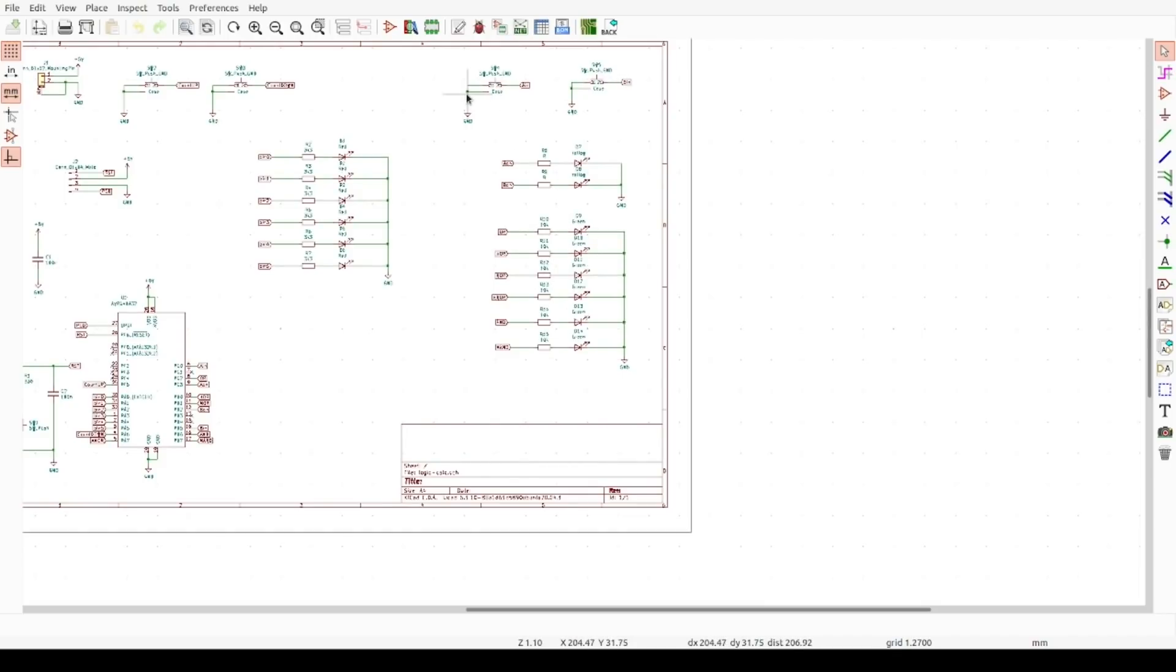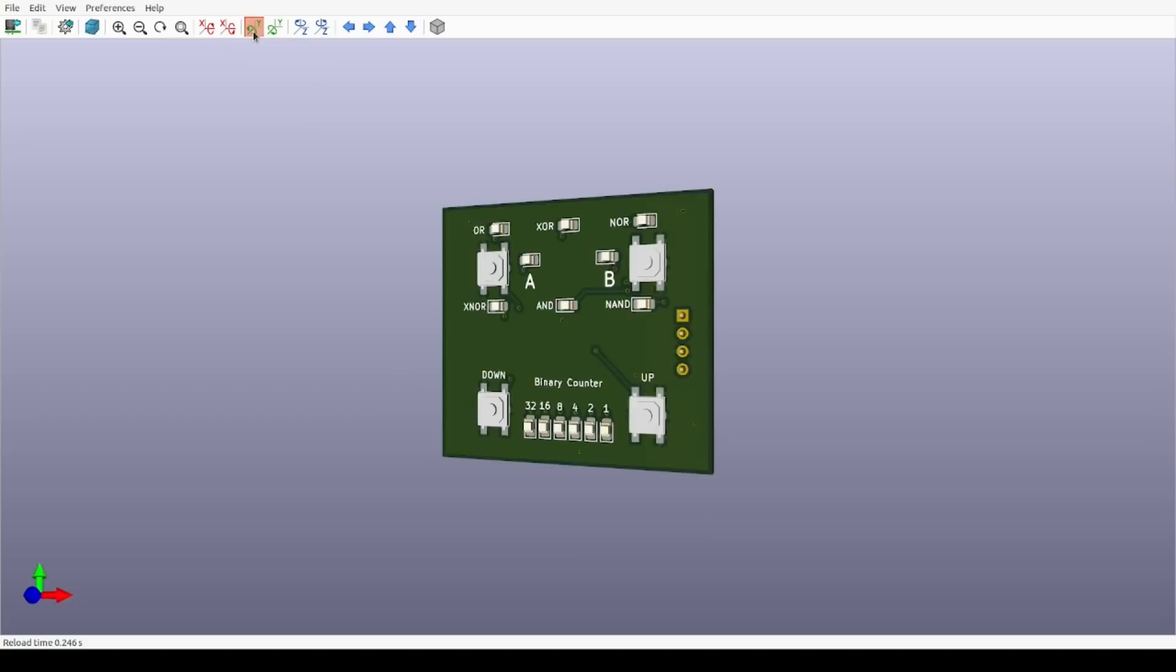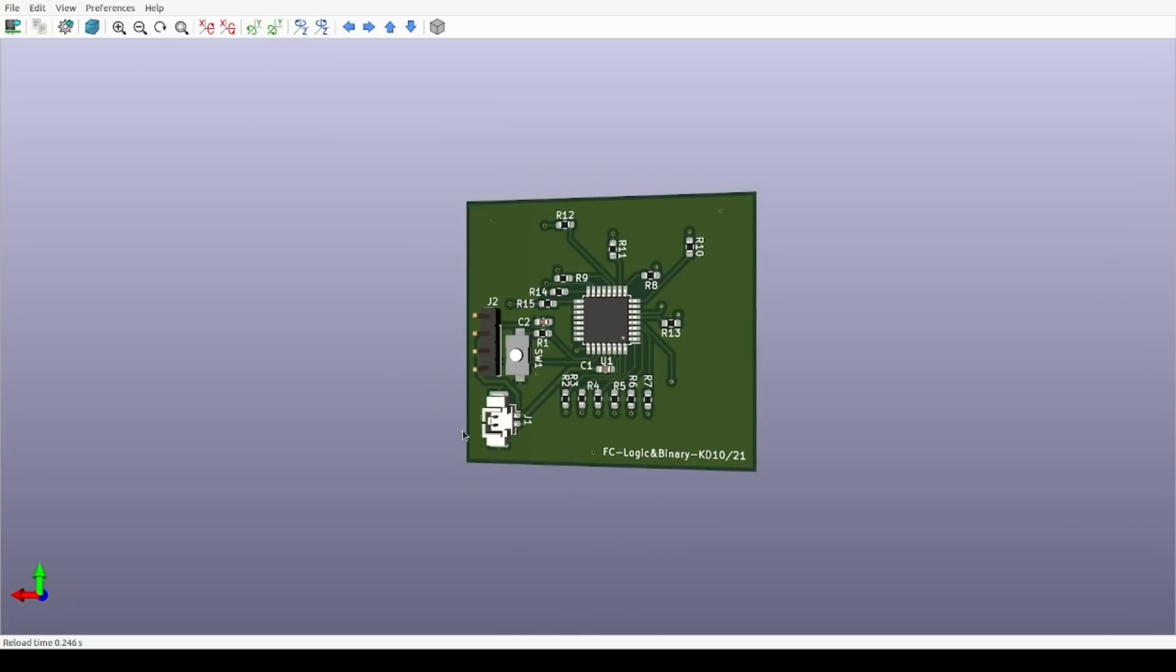And if I go into 3D mode, you can see what it looks like. I've got the four inputs. I've got the A and B indicator. I've got the logic outputs and I've got the six bit binary counter. And if I flip it over, you can see the power input and the micro controller. So that's the boards. I'm going to send off the design files to be made into PCBs and then I can solder them up.